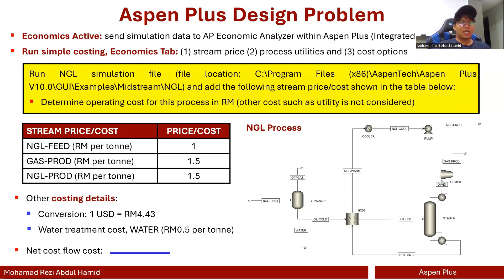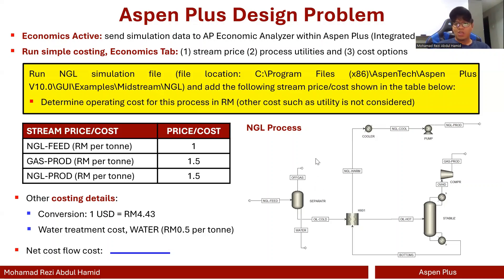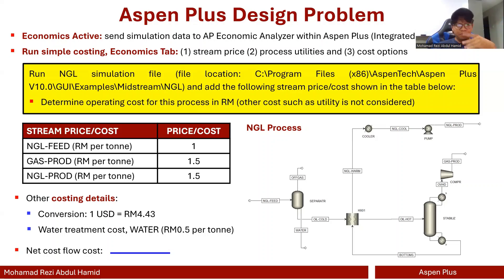What I'm going to do is assign stream prices for three streams: NGL feed, gas product, and NGL product. I'm not going to create a new simulation or flow sheet — I'm just going to open the existing one available in the Aspen Plus example files. I opened the NGL process file located at C:\Program Files\...\Examples\Midstream folder. Just open it and run. What I'm trying to do here is determine the operating costs for this process in Malaysia.